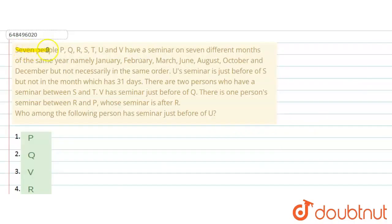The question says, 7 people P, Q, R, S, T, U, V have seminar on 7 different months of the same year: January, February, March, June, August, October, December.